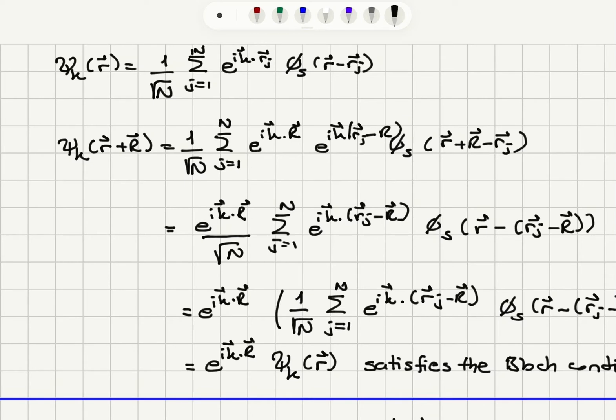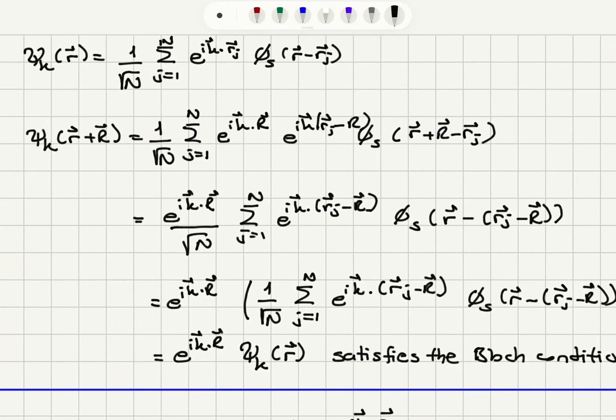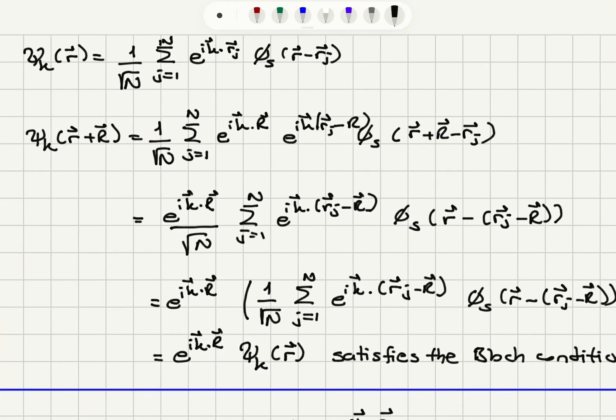So e to the i k dot capital R is out of the summation so I get sum over j equals 1 to N e to the i k dot rj minus R phi s of r minus rj minus R.